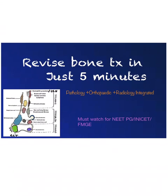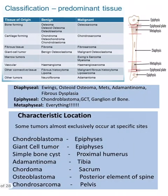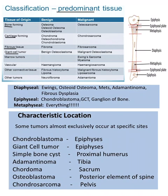Starting with bone tumors — how they are classified. Basically, bone tumors can arise from bone, from cartilage, from fibrous tissue, from giant cell tumor, from vascular causes, or from other connective tissue disorders.